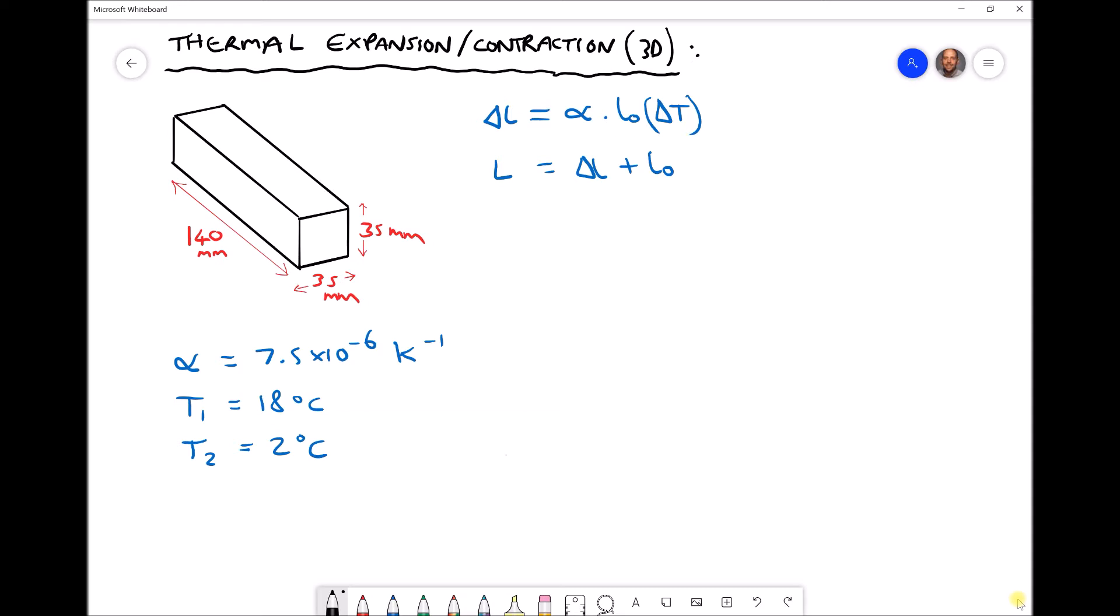What we're going to do in this video is analyze that in the context of three dimensions. So we're going to look at the three dimension changes for our block when it's cooled from a temperature of 18 degrees C down to a temperature of 2 degrees C, and once we've evaluated the change in each of those dimensions we can calculate the change in volume as a result.